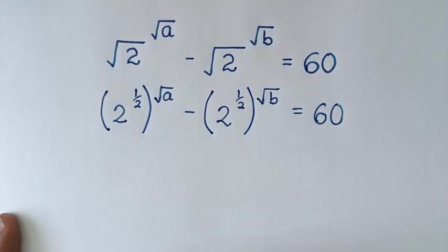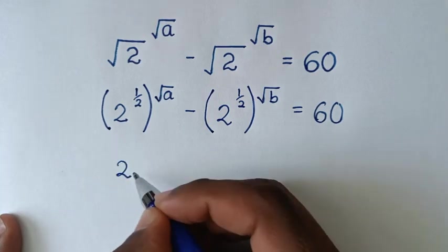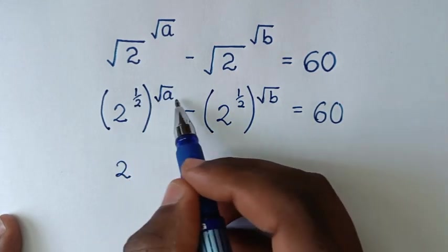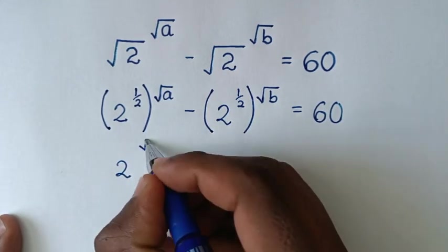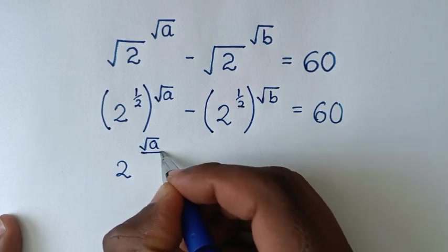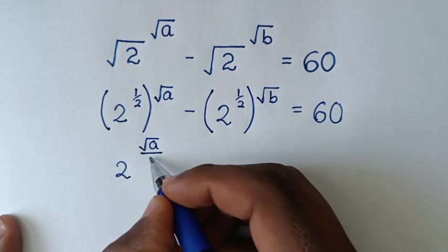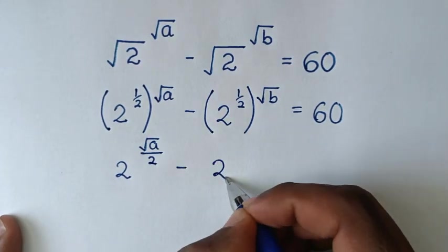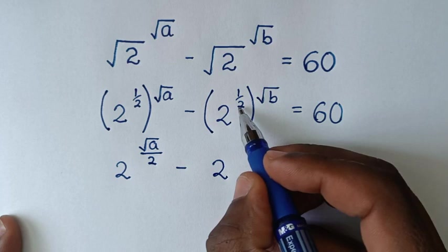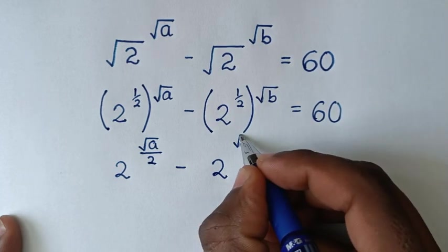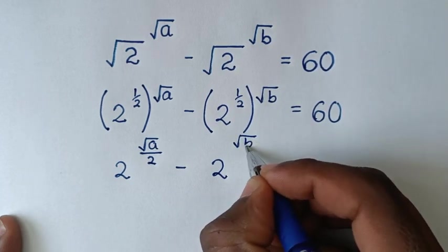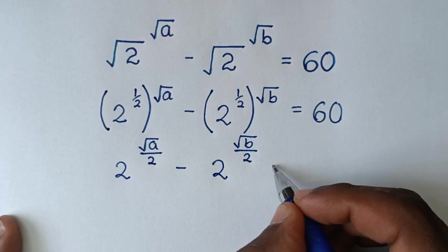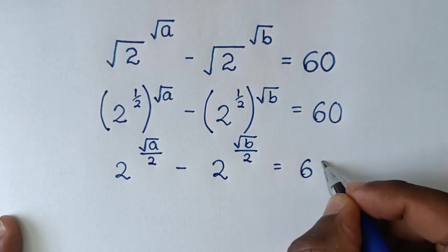Then in the next step, it will be 2 power of a half times square root of a, which simplifies to square root of a over 2, minus 2 power of a half times square root of b, which is square root of b over 2, is equal to 60.